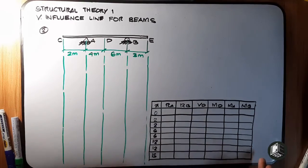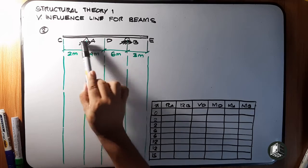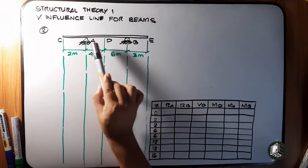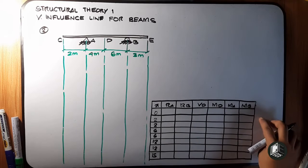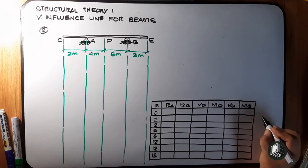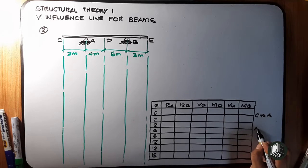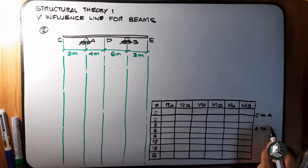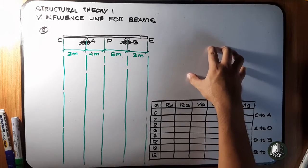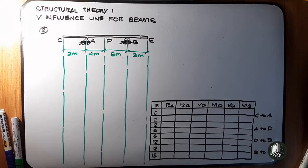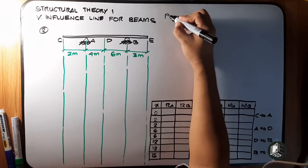A table is also pre-prepared for the ordinates, from 0 to 2, then 2 to 6, then 6 to 12, and 12 to 15. These correspond to segment C to A, then A to D, then D to B, then B to E. That is the space for our reactions, shear, and moment.